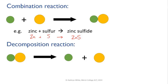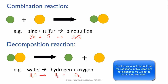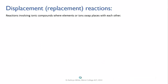The opposite to a combination reaction is a decomposition reaction. In this type of reaction you take a single compound and make it decompose to give two or sometimes more products. An example is the decomposition of water, done by passing electricity through it. The bonds holding the water molecules together are broken and the atoms rearrange to give pure hydrogen H₂ and oxygen O₂.